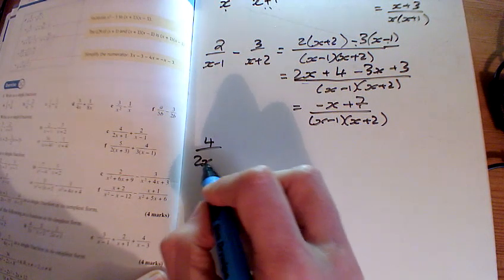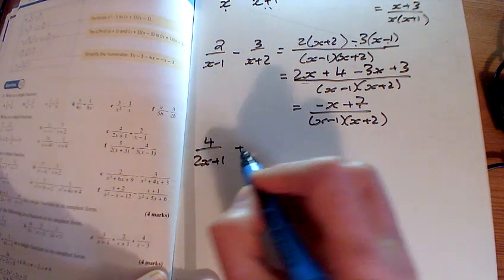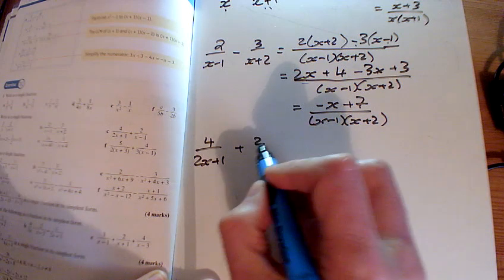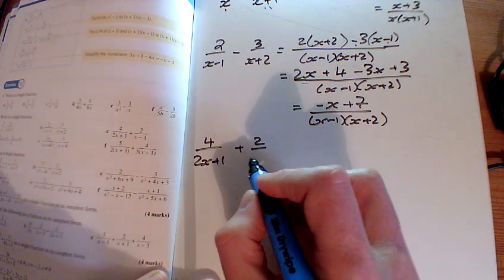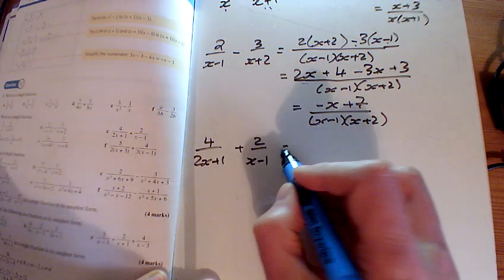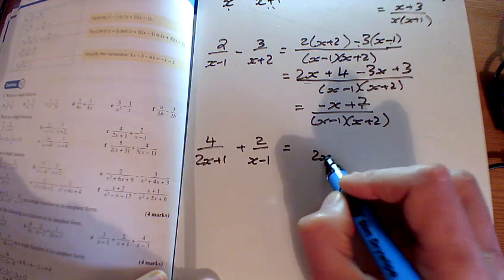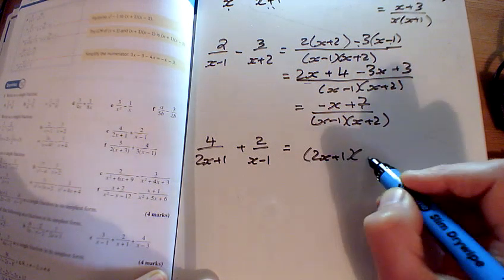The third one here, I've got 2 over 2x plus 1, sorry, 4 over 2x plus 1 and 2 over x minus 1. So the common denominator, again, are these two things times together.